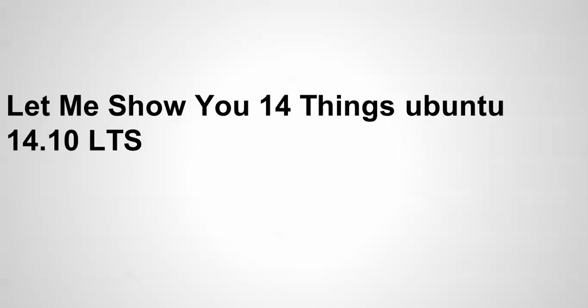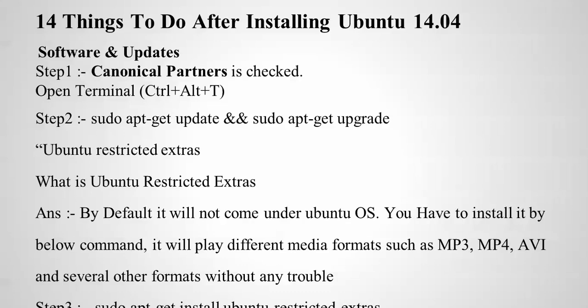Hello everyone, welcome to the Cloud Network. In this video I will show you 14 things you need to know about Ubuntu 14.04 LTS. First of all, the 14 things you need to install in Ubuntu: first you need to check Canonical Partners, then we'll do updates and upgrades, and after that we'll cover Ubuntu Restricted Extras — which by default does not come with Ubuntu OS, so you have to install it manually to play media formats like MP3, MP4, AVI, and others.